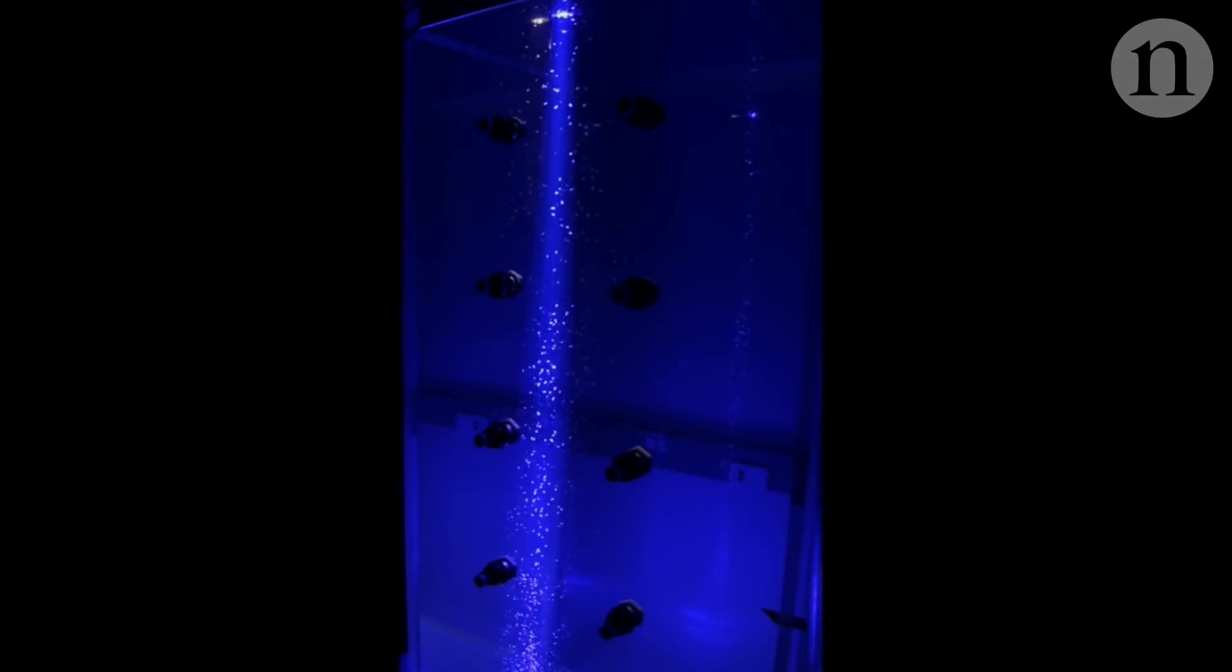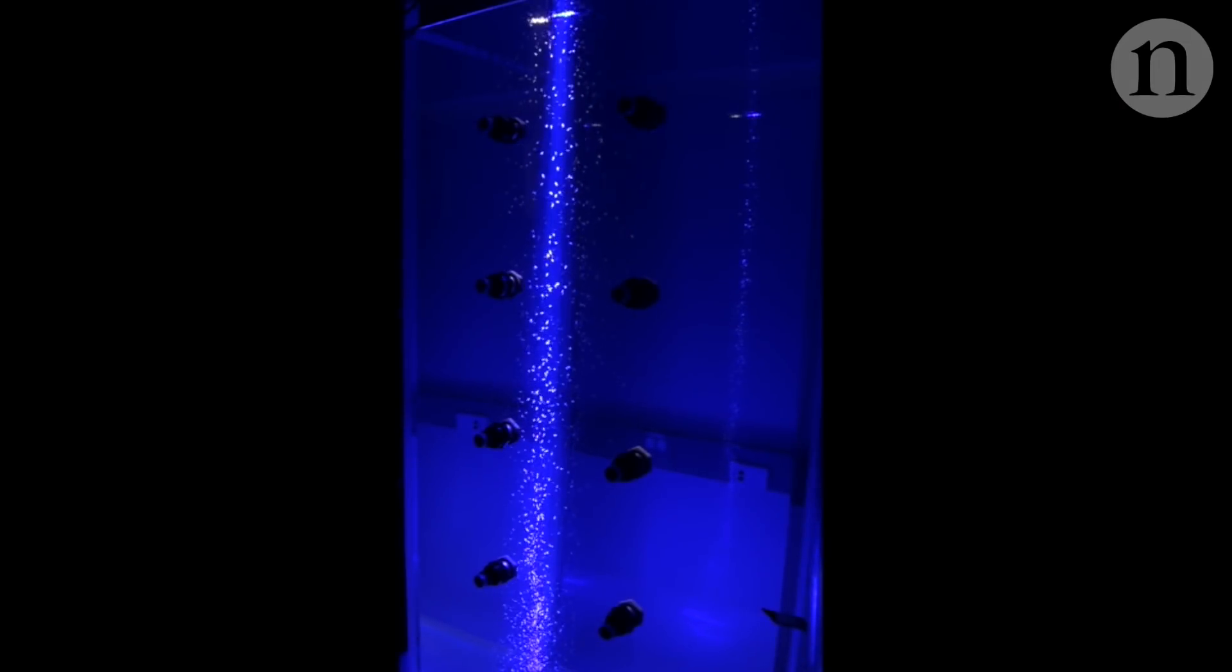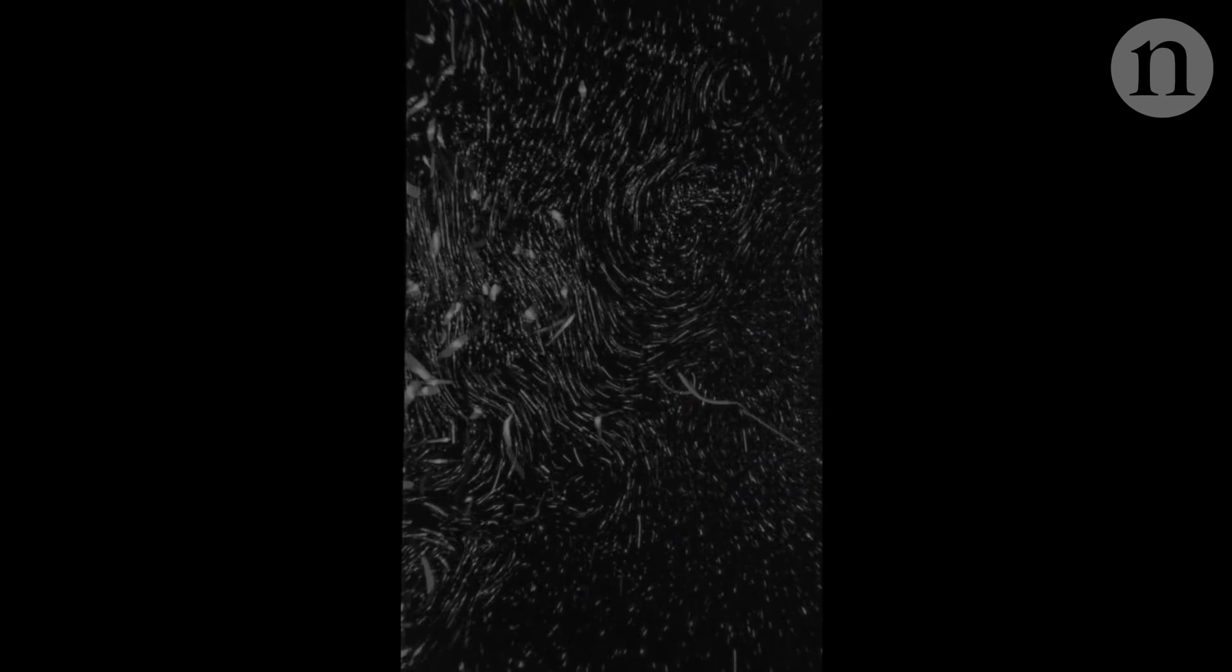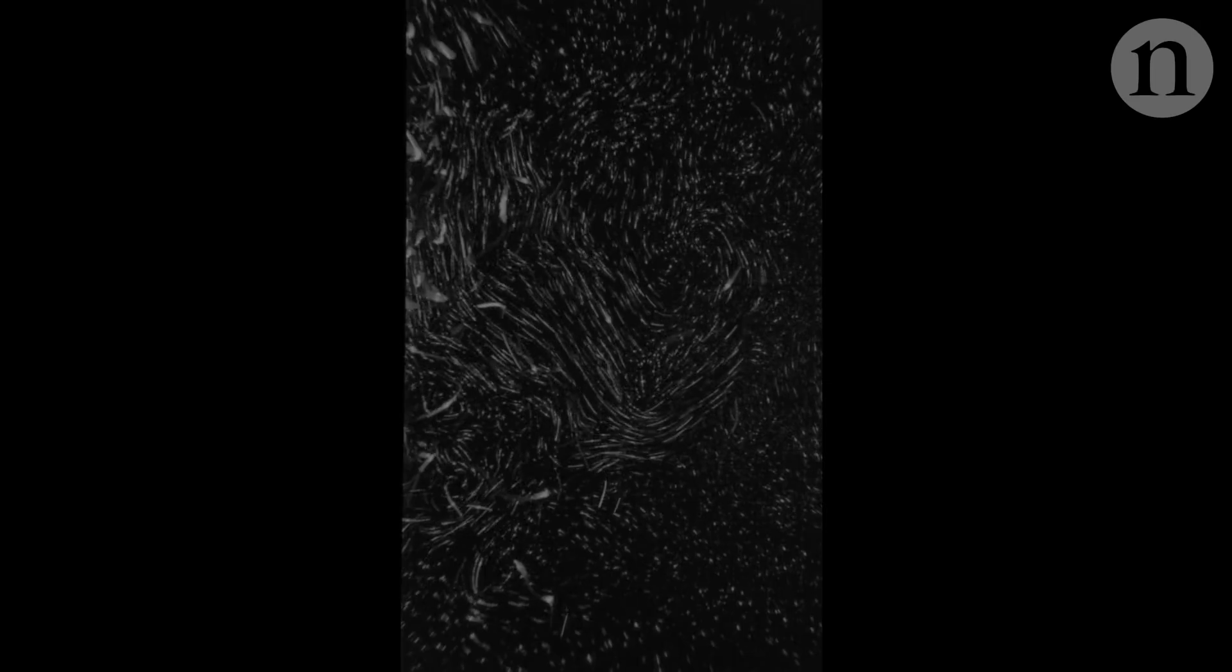To find out, researchers kept groups of brine shrimp in tall tanks in their lab. Then they suspended tiny particles in the water, which they could track to analyze its flow.